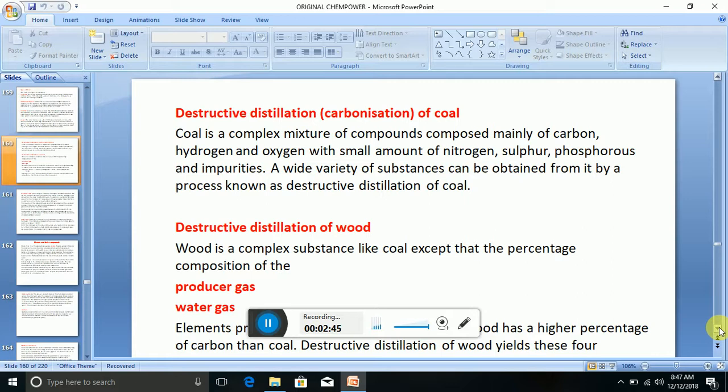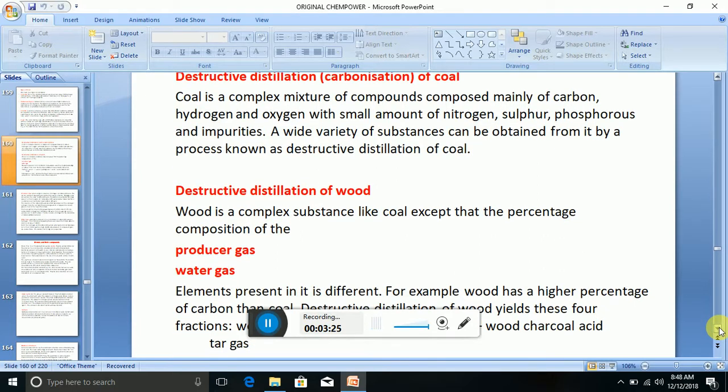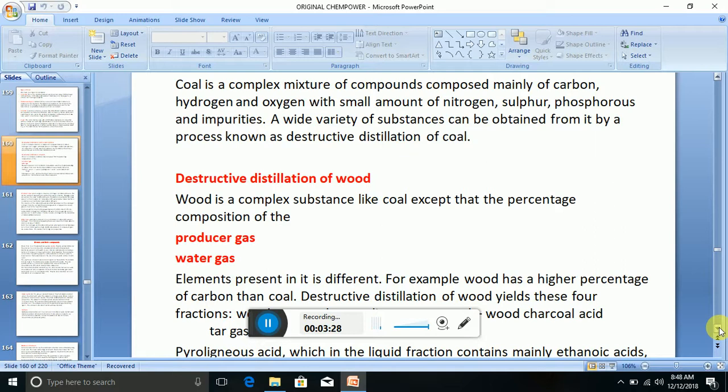Now let's look at destructive distillation of coal, or you call it carbonization of coal. Coal is a complex mixture of compounds composed mainly of carbon, hydrogen, and oxygen, with small amounts of nitrogen, sulfur, phosphorus, and impurities. A wide variety of substances can be obtained from it by a process known as destructive distillation of coal. Now there is also destructive distillation of wood.